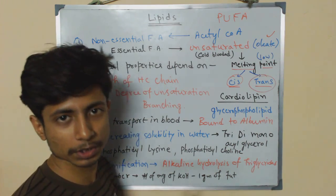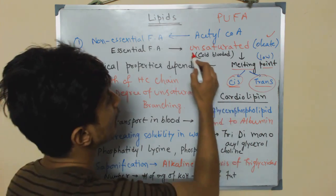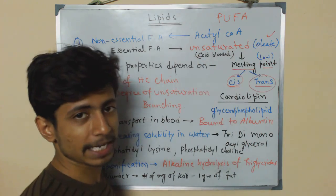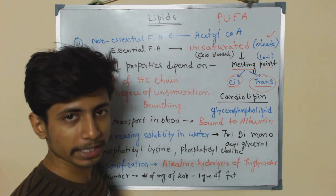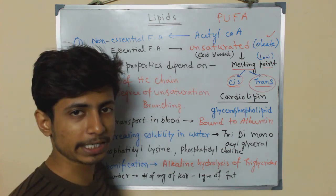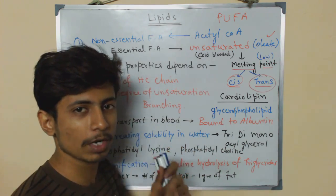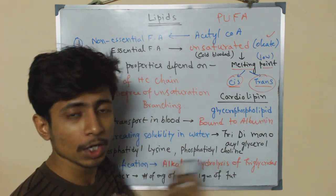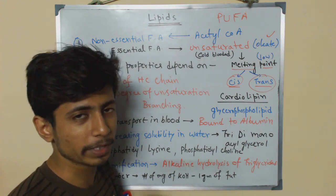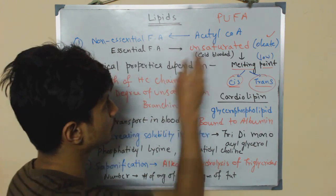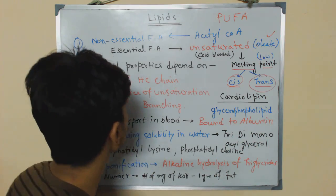Cold-blooded animals have more unsaturated fatty acids than saturated types in their cell membranes. Cell membranes are a huge reservoir for fatty acids. If they had saturated fatty acids, the membrane would become too compact in cold environments, halting phospholipid movement. Unsaturated fats give the membrane room to remain fluid.